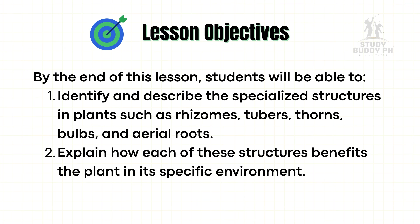By the end of this lesson, students will be able to identify and describe the specialized structures in plants such as rhizomes, tubers, thorns, bulbs, and aerial roots. They will also explain how each of these structures benefits the plant in its specific environment.